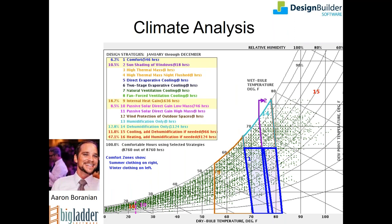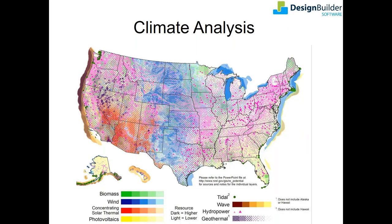The National Renewable Energy Lab had produced a chart on typical renewables applicability in different parts of the country. Nebraska, in the center of the US, is particularly suitable for wind power, and there's also some biomass potential because of the many farms in the area, as well as hydropower — Omaha sits right on the Missouri River on the eastern border of the state.